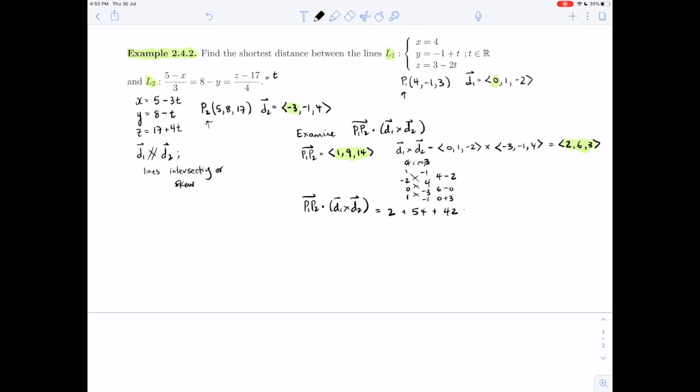And in particular, that is not 0. So the lines are non-coplanar, and therefore they must be skew.